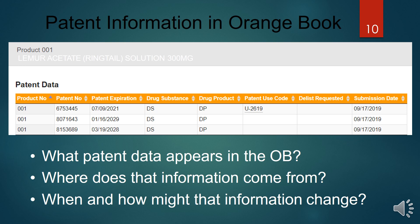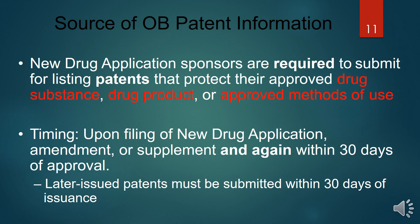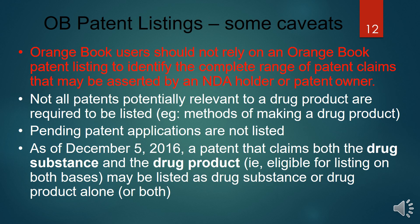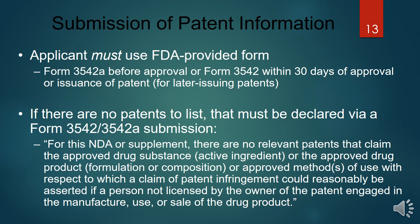Key questions addressed include: what patent data appears in the Orange Book, where that information is gathered from, how that information can change, and what the submission date is. The Orange Book patent information helps protect the approved drug substance, drug product, or approved method of use upon filing of an NDA or new drug application, or any amendment or supplement.